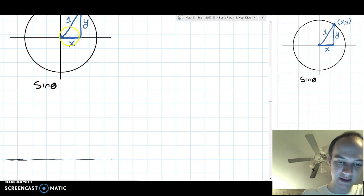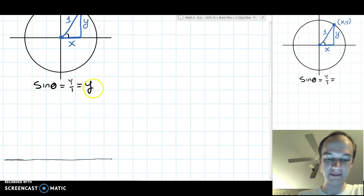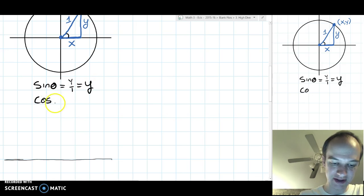Sine of theta, if this is our angle theta, is going to be y over 1, or just y. Cosine of theta is going to be x over 1, adjacent over hypotenuse, or just x.